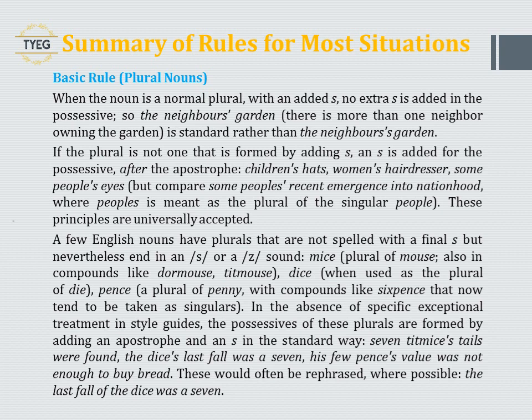These principles are universally accepted. A few English nouns have plurals not spelled with a final S but nevertheless ending in an /s/ or /ts/ sound: mice (plural of mouse), dice (plural of die), and pence (plural of penny). The possessives of these plurals are formed by adding apostrophe-S in the standard way: 'seven titmice's tails were found', 'the dice's last fall was a seven', 'his few pence's value was not enough to buy bread'. These would often be rephrased where possible: 'the last fall of the dice was a seven'.